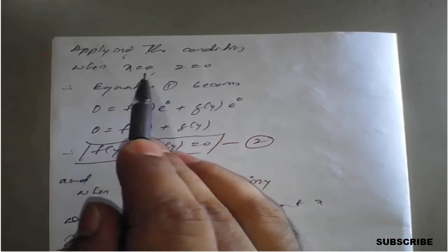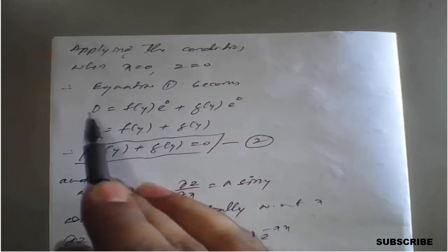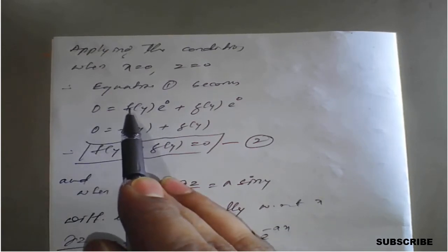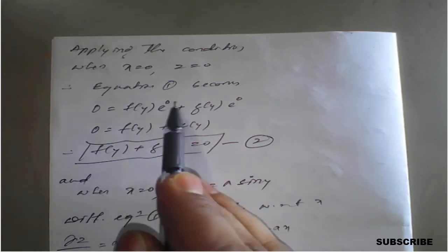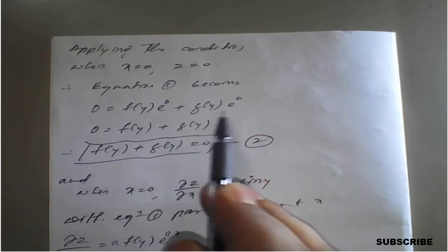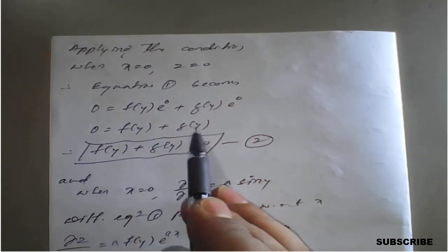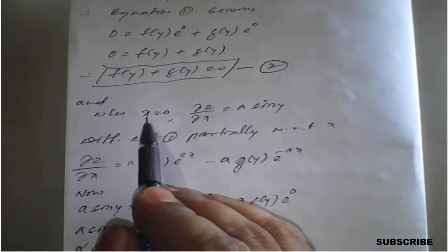Applying the first condition — when x = 0, z = 0 — equation one becomes: 0 = f(y)·e⁰ + g(y)·e⁰, which simplifies to f(y) + g(y) = 0. Call this equation number two.